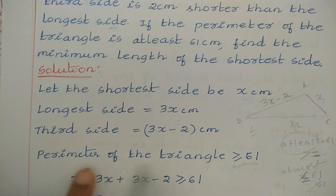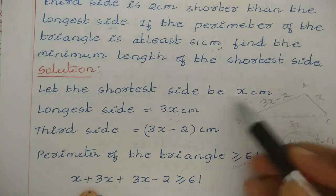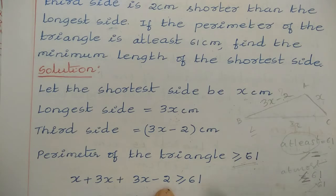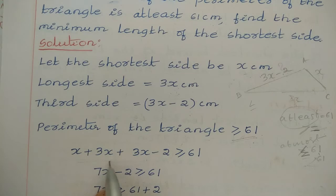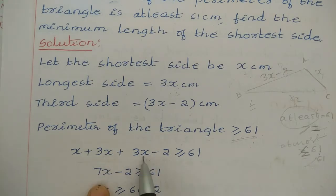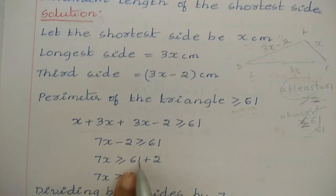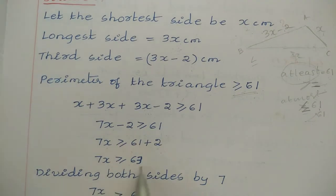The perimeter is found by adding all three sides. One side is x, another is 3x, and the third is 3x − 2. The inequality is: x + 3x + (3x − 2) ≥ 61. Simplifying: 7x − 2 ≥ 61, so 7x ≥ 61 + 2, giving 7x ≥ 63.